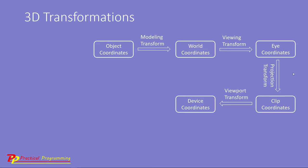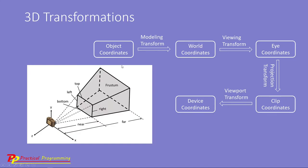The purpose of projection transform is to define a view volume called the view frustum. The frustum determines how the object is projected onto the screen. It also defines which portion of the object are clipped out of the final image — only the portion of the object inside this frustum will be kept, and anything outside will be clipped out. Finally, we use the viewport transform to convert clip coordinates into the normalized device coordinates that will actually be used to draw the object on your computer screen. In WebGPU, the viewport transform is automatically performed in the vertex shader code.